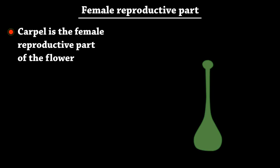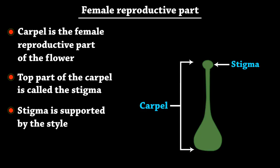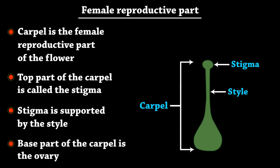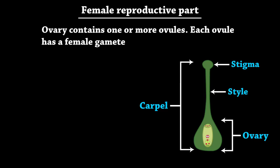Carpel is the female reproductive part of the flower. The top part of the carpel is called the stigma. Stigma is supported by the style. The base part of the carpel is the ovary. The ovary contains one or more ovules, and each ovule has a female gamete.